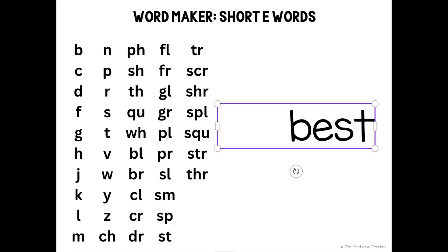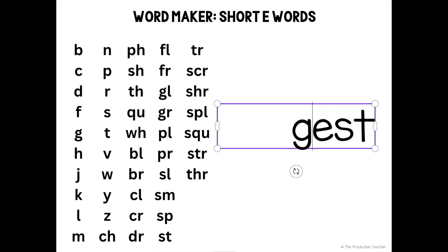Best. Best is a word. Sest. Sest is not a word. Remember, the letter C makes the S sound before the letter E. Dest. Dest is not a word. Fest. Fest is not a word. Jest. Jest is not a word. Remember, the letter G makes the J sound before the letter E. Hest. Hest is not a word. Jest. Jest is a word.